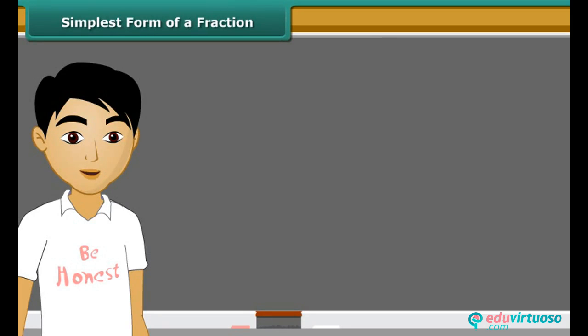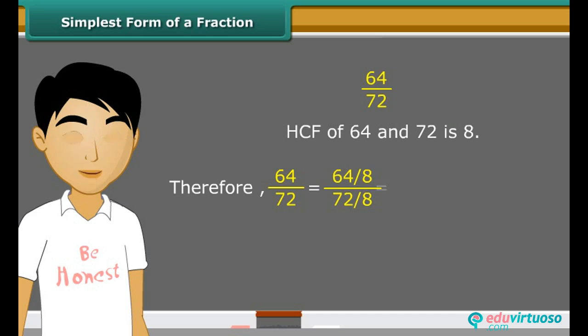Students, a second method to find the equivalent fraction in the simplest form is to find the HCF of the numerator and denominator and then divide both of them by the HCF. Consider fractions 64 upon 72. The HCF of 64 and 72 is 8. We get new fraction 8 upon 9 on dividing the numerator and denominator both by HCF.